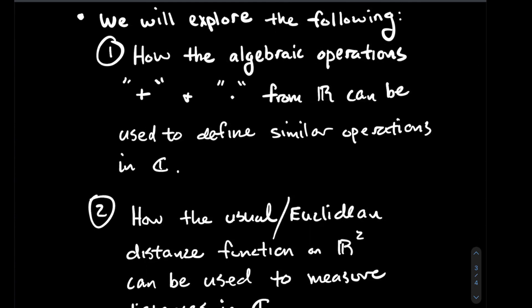The second thing we'll spend time thinking about is: how does the way that I measure distances in the plane between two points, my Euclidean distance function, can I use that in some way to talk about how far apart two complex numbers are?